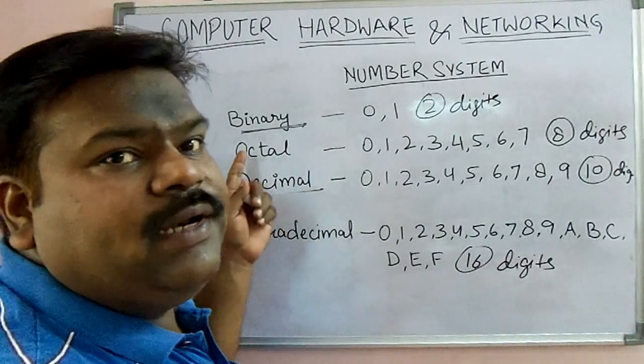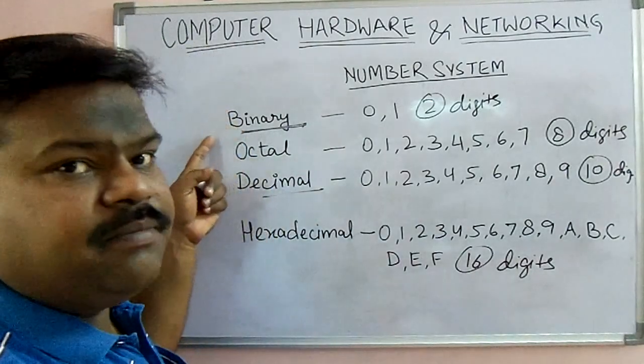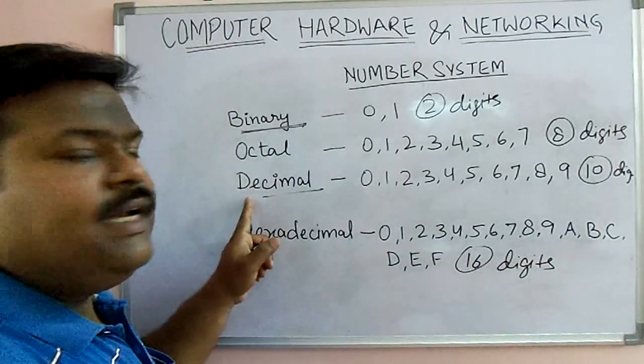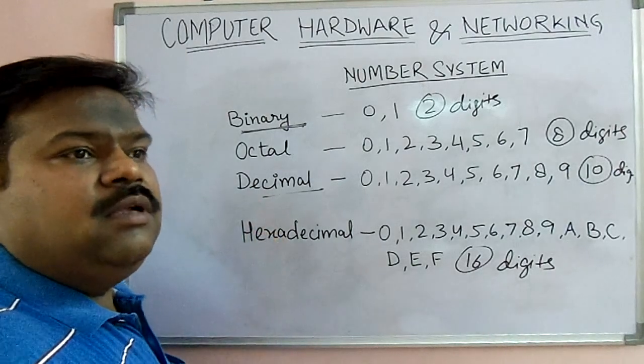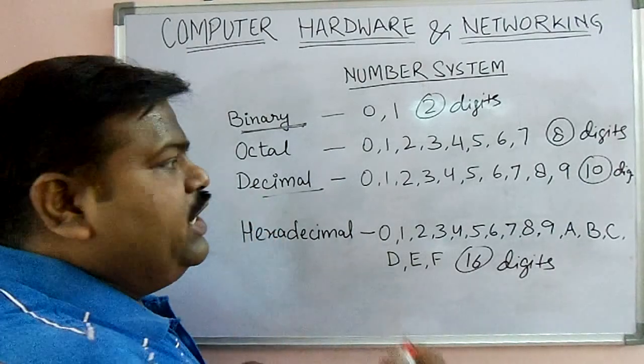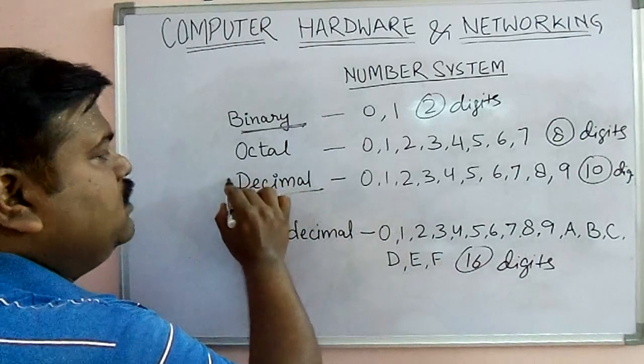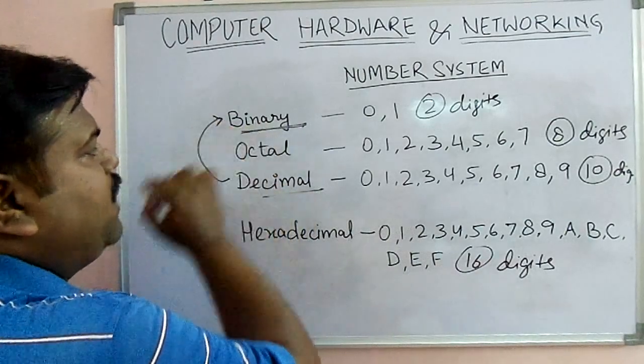Computer only understands binary number system. It is not going to understand decimal number system. So there must be some mechanism to change this decimal number system to binary number system.